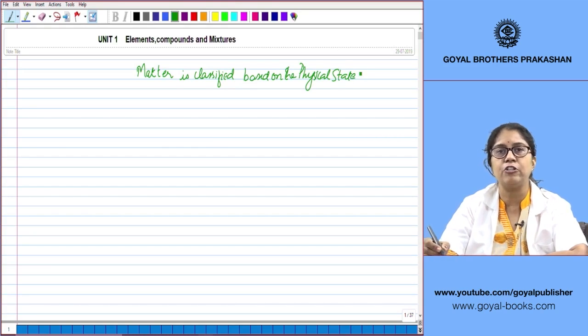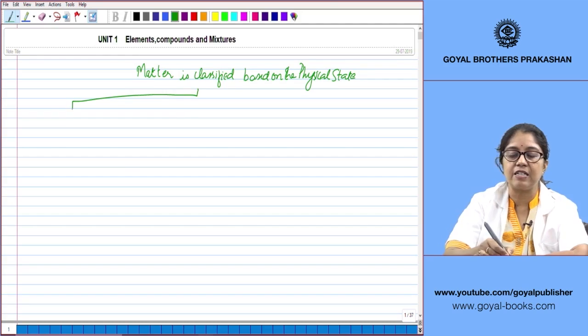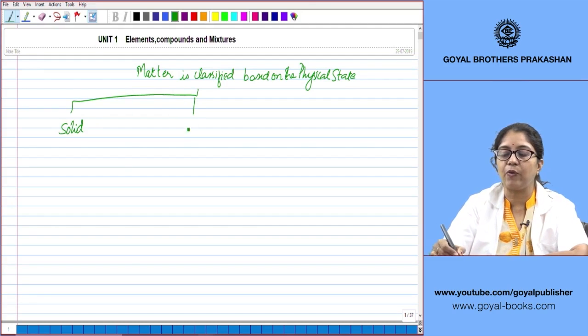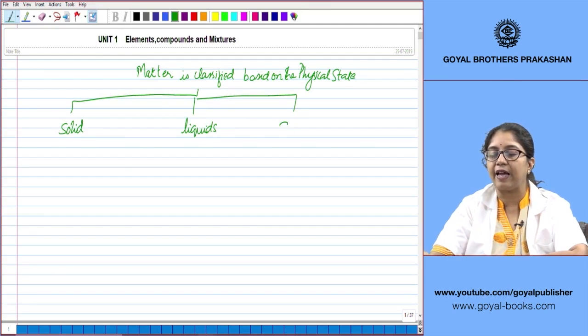This you must have learnt in your lower classes, right? So matter is classified based on the physical state as solid, liquids, and gases.